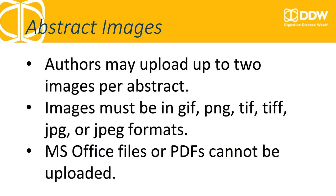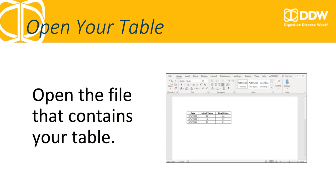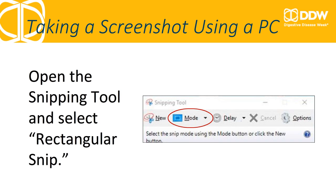We'll now discuss that process for both PC and Mac users. The first step is to open the file that contains your table. If you are using a PC, you should then open the Snipping Tool program. To open Snipping Tool, select the Start button, type Snipping Tool, and then select it in the search results.